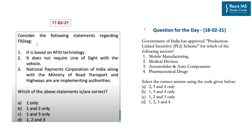Today's practice question: The Government of India has approved the Production-Linked Incentive scheme for which of the following sectors? (1) Mobile manufacturing, (2) Medical devices, (3) Automobiles and auto components, (4) Pharmaceutical drugs. Options: A) 2, 3 and 4 only; B) 1, 3 and 4 only; C) 1, 2 and 3 only; D) 1, 2, 3 and 4.